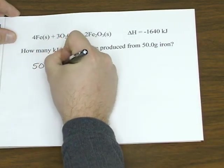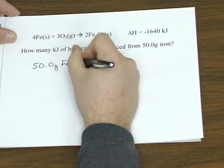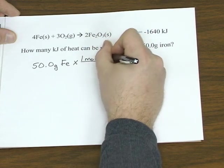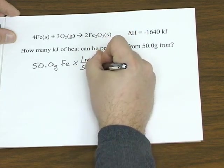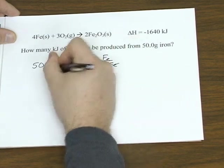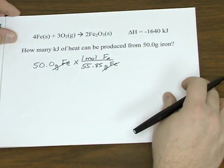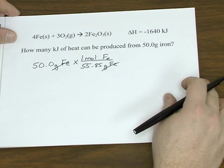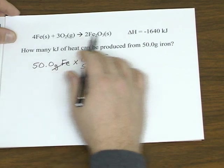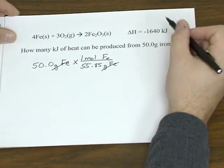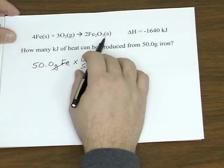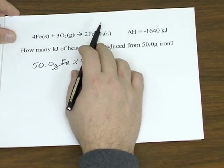So we have 50 grams of iron, and we'll convert that to moles using iron's atomic weight of 55.85 grams per mole. And one thing to remember about thermochemical equations is that this enthalpy change that's given, that's relative to the stoichiometry of the reaction.